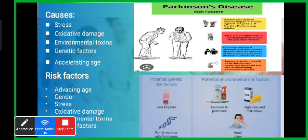Research suggests that stressful events may increase the risk of Parkinson's disease. Animal studies indicate that stress damages dopamine cells, resulting in more severe Parkinson's symptoms. In humans, acute stress can worsen motor symptoms including bradykinesia, freezing, and tremor.